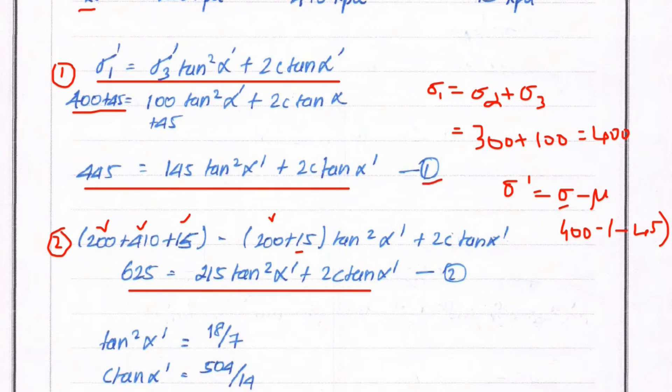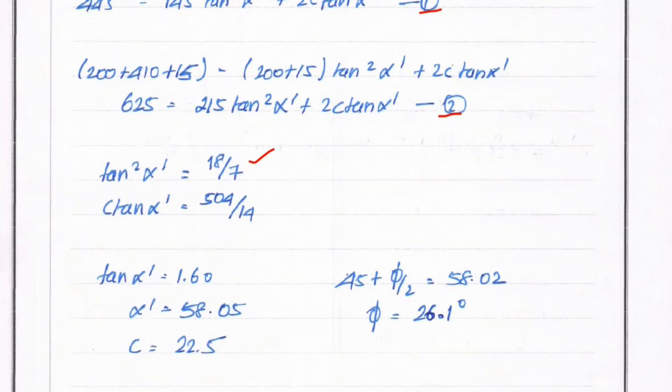We equate Equation 1 and Equation 2. Subtracting, we get the value: tan squared alpha equals 80 divided by 70. From that, tan alpha equals 1.60, and therefore alpha equals tan inverse of 1.60, which equals 58.05 degrees.